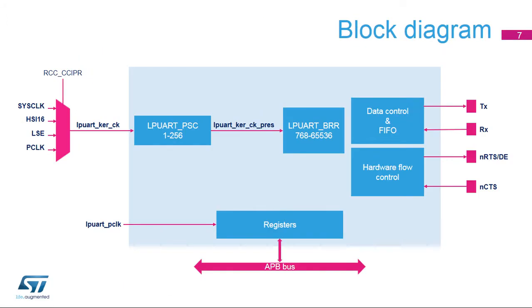This is the LPUART block diagram. The LPUART clock source, LPUART kernel clock, can be selected from several sources: peripheral clock, named APB clock or P-clock, and SIS clock, which is the high-speed internal 16 MHz oscillator or HSI16.